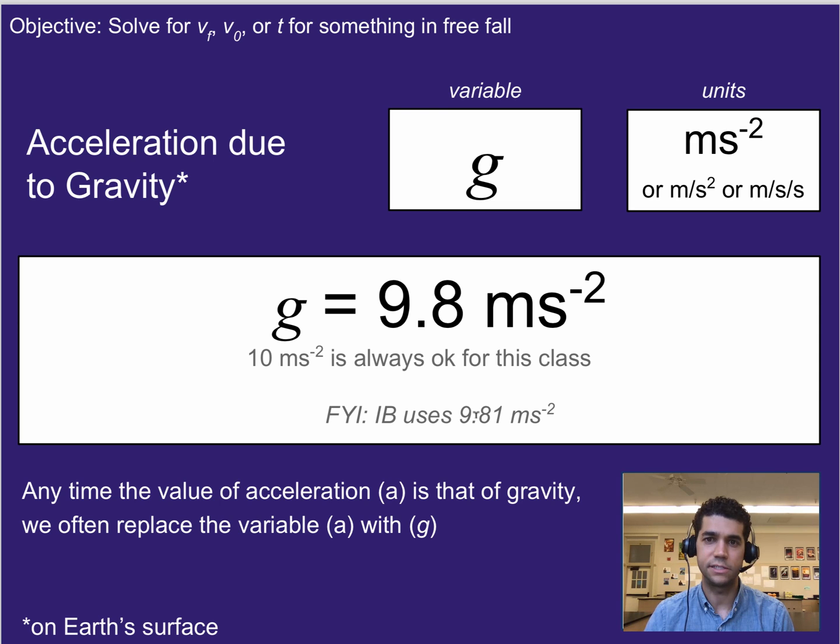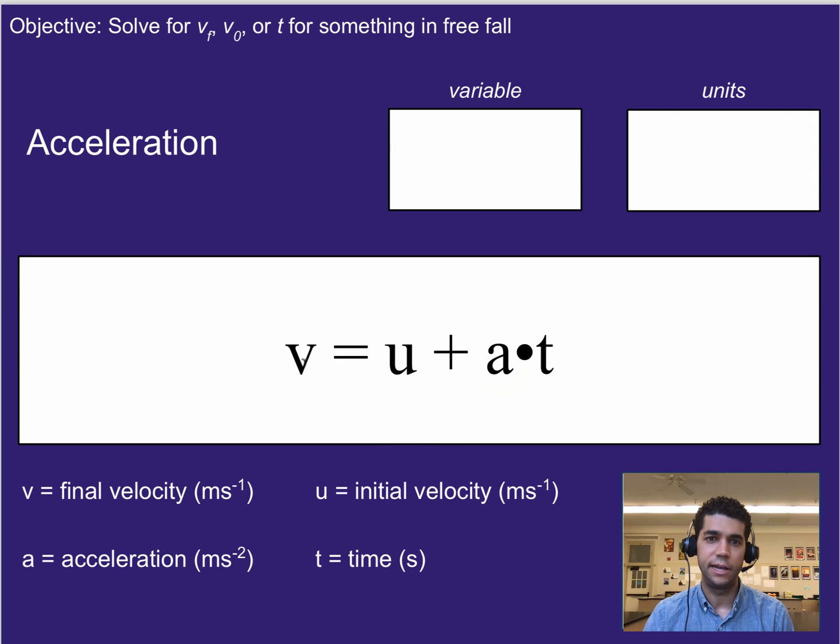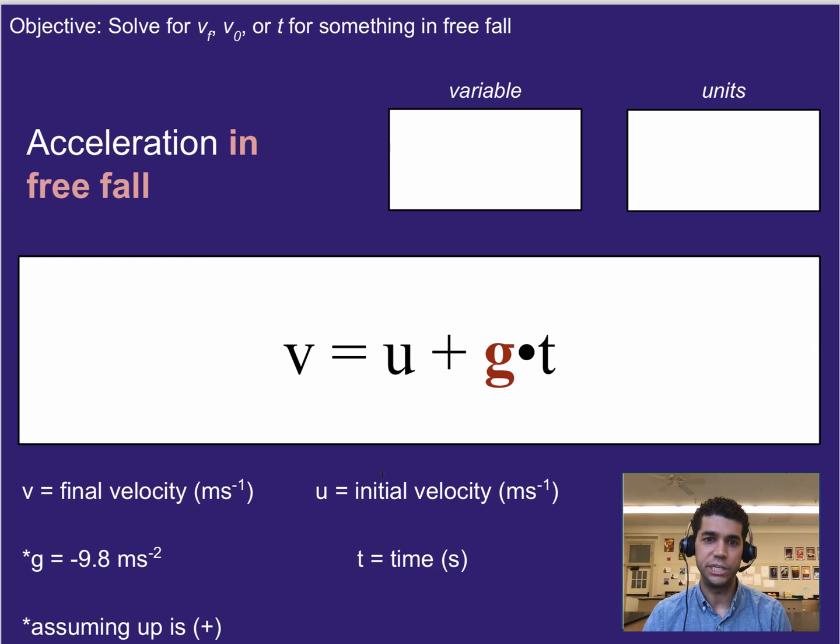Now, since this is a value of acceleration, anytime we see acceleration in an equation, like, for example, final velocity equals initial velocity plus acceleration times time, we can just plug in the value for gravity into this. And this would now describe how fast is something going versus time if it's in free fall. So plugging g in, that would give us that equation or that description of the situation.